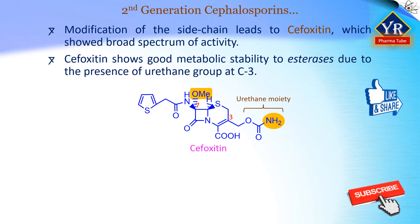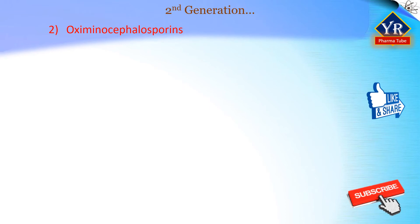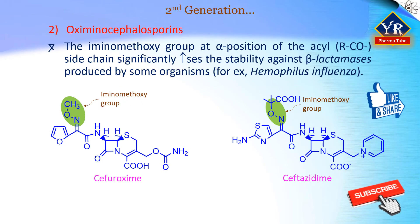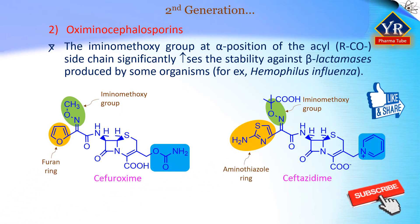The development of oxyiminocephalosporins has been a major advance in cephalosporin research. These structures contain an iminomethoxy group at the alpha position of the acyl side chain, which significantly increases the stability of the cephalosporins against the beta-lactamases produced by some organisms, for example, Haemophilus influenzae. The first useful agent in this class of compounds is cefuroxime. Like cefoxitin, cefuroxime has increased resistance to beta-lactamases and mammalian esterases. Unlike cefoxitin, cefuroxime retains activity against streptococci and, to a lesser extent, staphylococci.